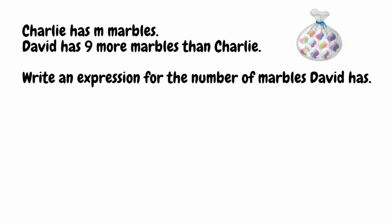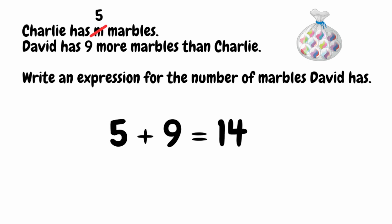For example, instead of m marbles, I'm going to say that Charlie has five marbles. So how would we figure out how many marbles David has? Well, we take the five that Charlie has, and because David has nine more marbles than Charlie, we simply add nine. So five plus nine gives us 14. So if Charlie has five marbles, David would have 14. That helps us understand what operation we need to use.